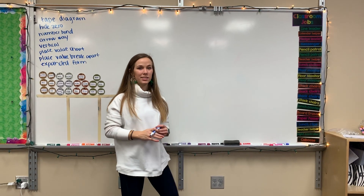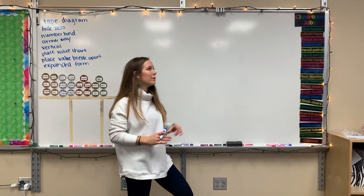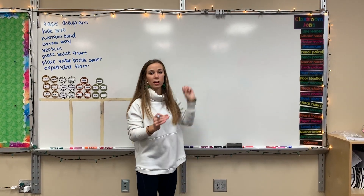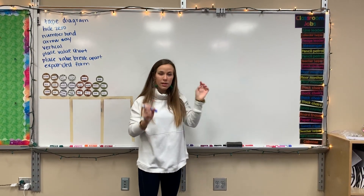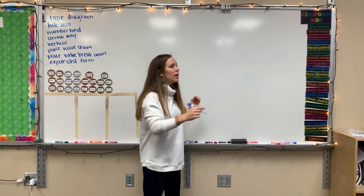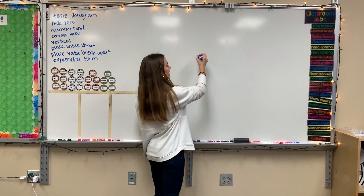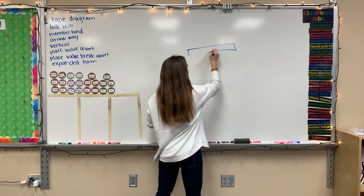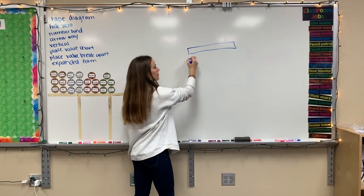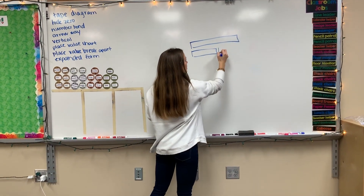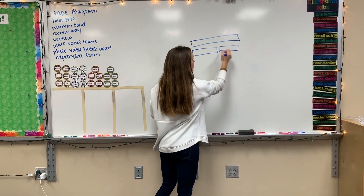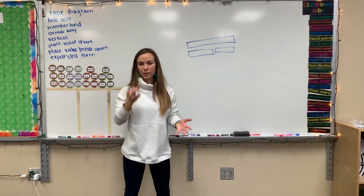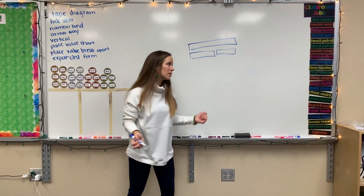The next one is the tape diagram. Just like how in the number bond we had the bigger number on top as our whole and the little two as our parts, if I have a tape diagram I'm going to have a whole and some parts. You need to base it off of the word problem and decide what you're trying to find.